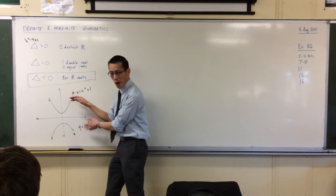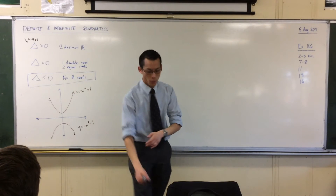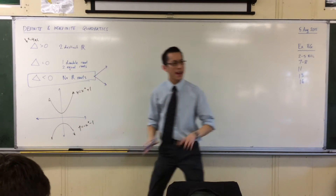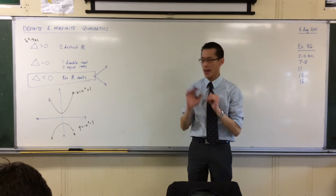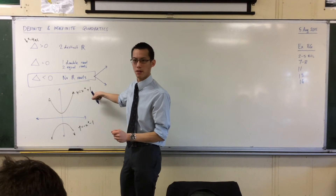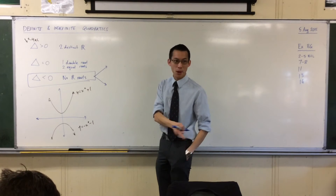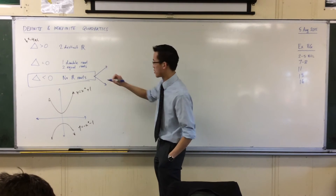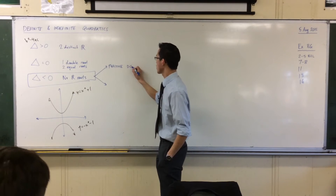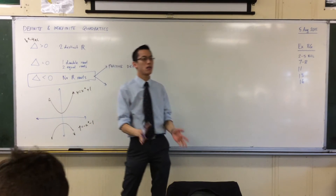So there are these two ways to have a negative discriminant with no real roots, and we distinguish between them. In the first case, where everything is above the axis, any value you put into this equation will definitely give a positive value. Since you definitely get a positive, we call these positive definite quadratics. This parabola is positive definite.